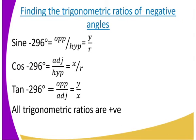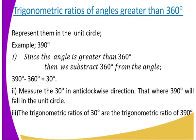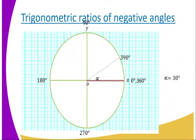In the first quadrant, all trigonometric ratios are positive. Now let us look at angles greater than 360 degrees. Taking the angle 390 degrees, we subtract 360 to get 30 degrees, so we find the trigonometric ratios of 30 degrees. It falls in the first quadrant, going in the anticlockwise direction from 360 degrees — as you can see from the diagram.